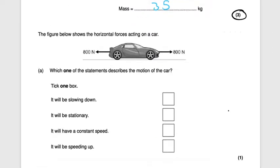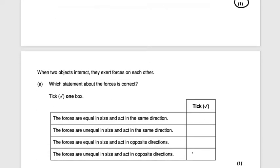The next figure shows the horizontal forces acting on a car. Which statement best describes the motion of the car? In the easterly direction we have 800 newtons and in the westerly direction we have 800 newtons. The resultant force is zero because there is no dominant direction. The car is not stationary since non-zero forces act in both directions, but it will move at constant speed. That is worth one mark.